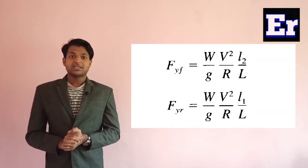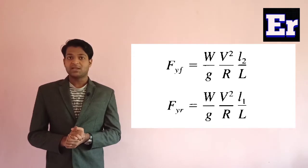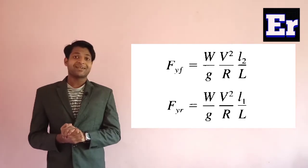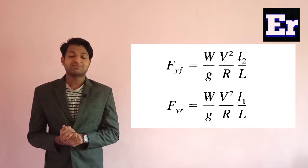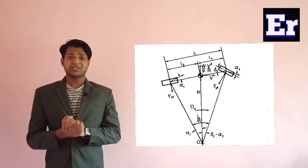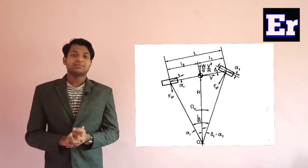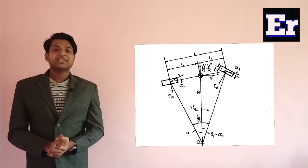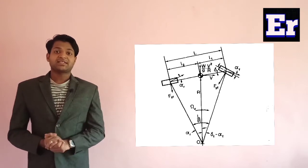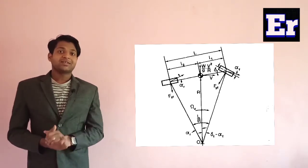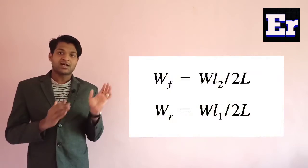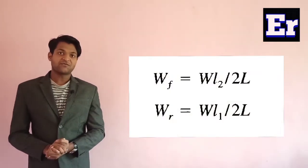From this we can write the cornering force F. Taking the moment with respect to the rear axle, we can write the equation for the cornering force at the front axle, and taking the moment with respect to the front axle, we can write the cornering force at the rear axle. We can rewrite the equation of cornering force by considering the weight acting on each axle, treating the forces as the sum acting on two tires.